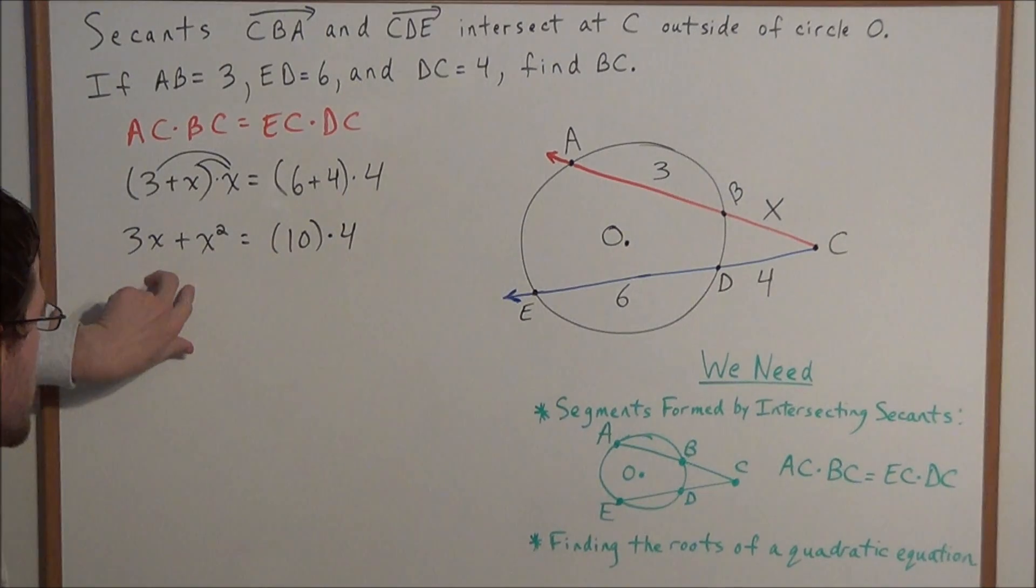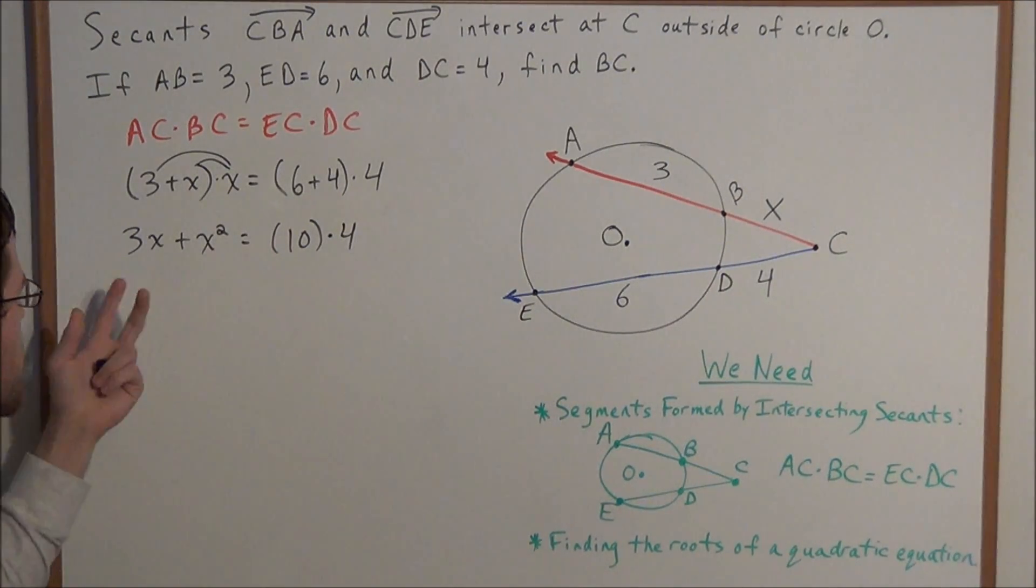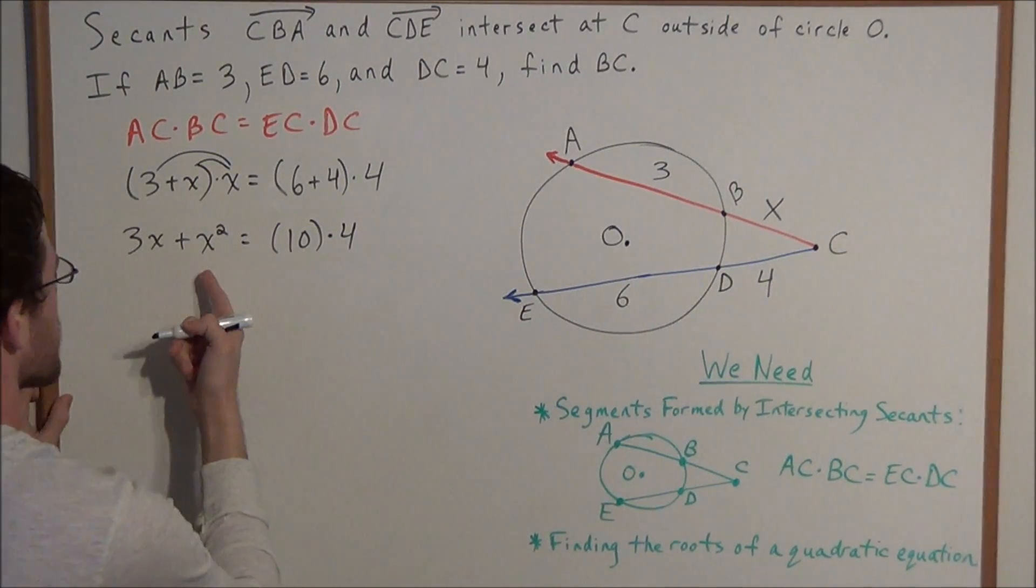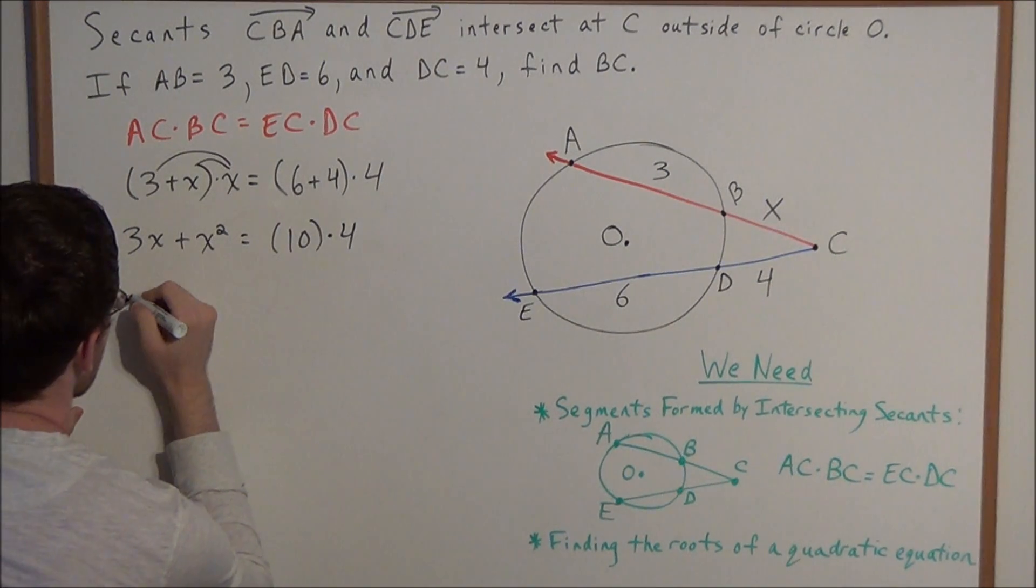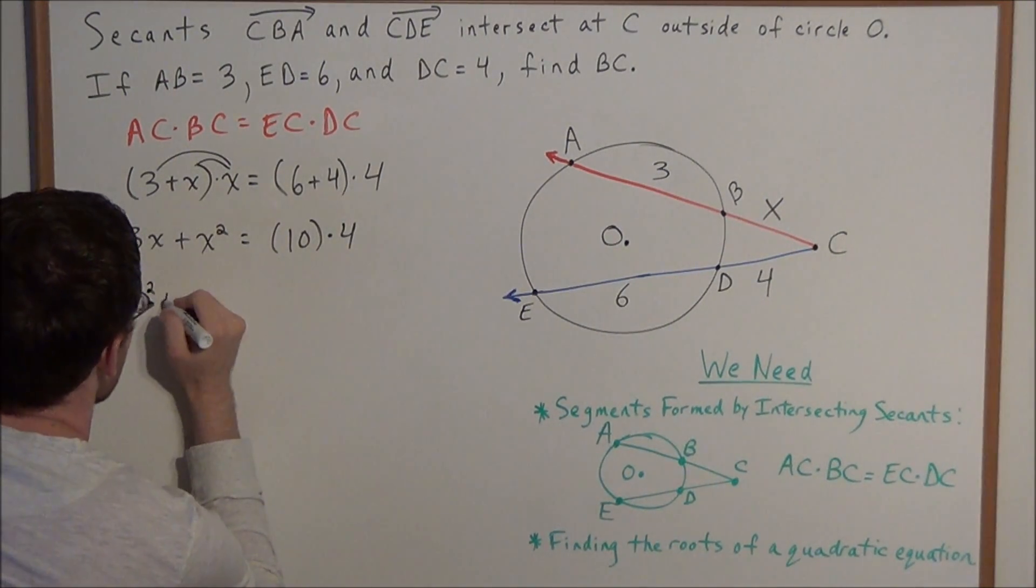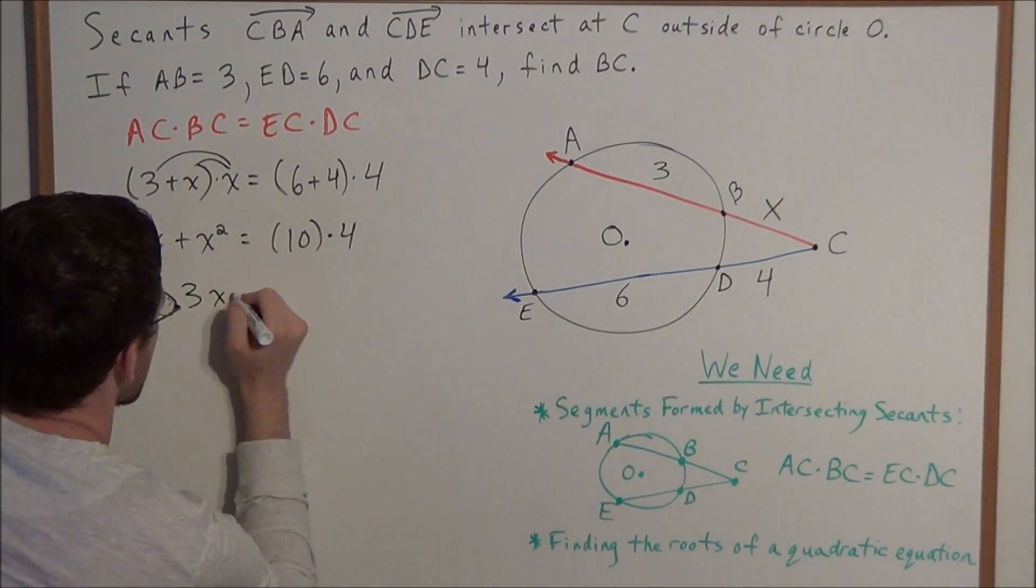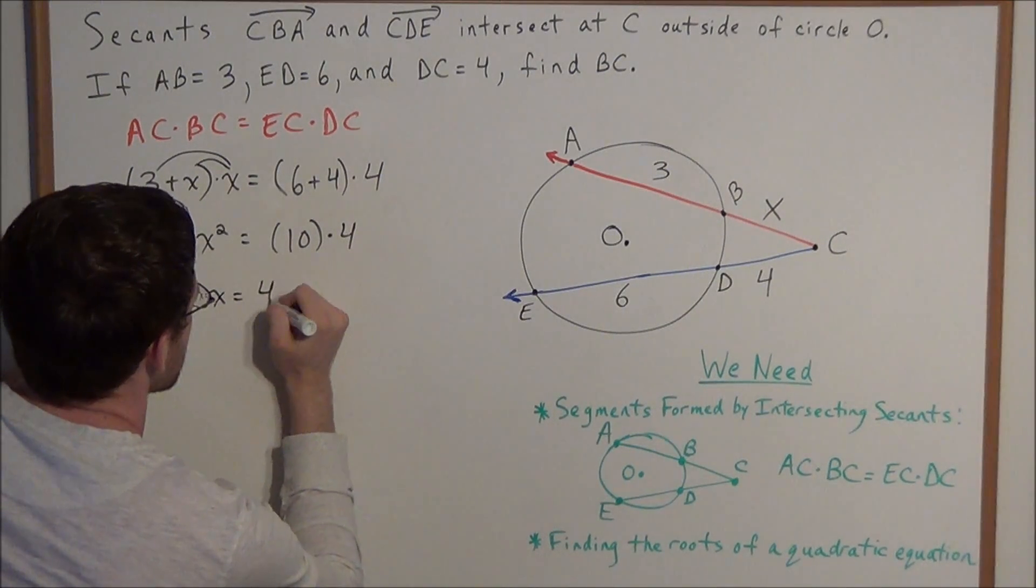Now on the left hand side I'll use the commutative property of addition, because we always want to start with a leading X squared. So we have X squared plus 3X equals 10 times 4 is 40.